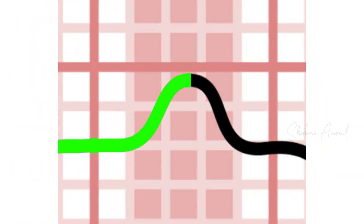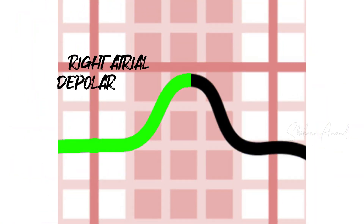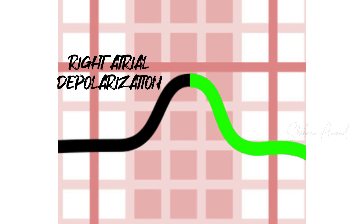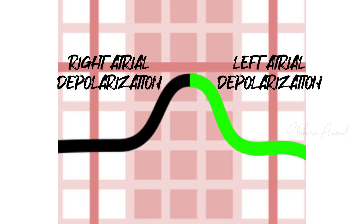Atrial muscle depolarization state is called P-wave in ECG. In the P-wave, the first half indicates right atrial node depolarization. The second half indicates left atrial node depolarization.